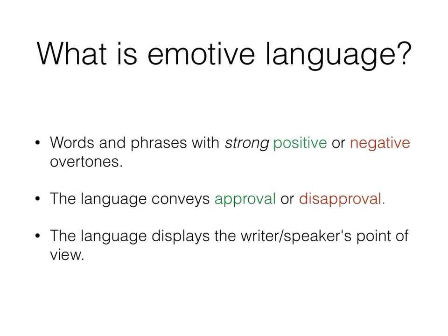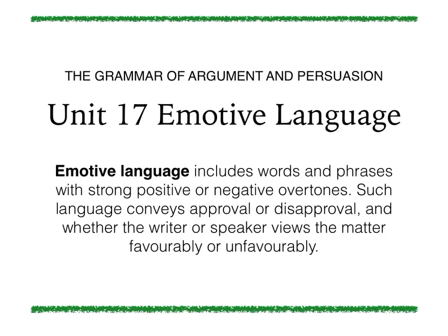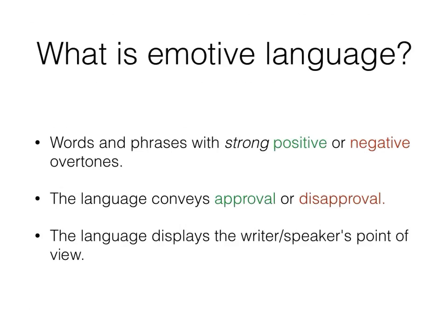So what exactly is Emotive Language? Emotive Language includes words and phrases with strong positive or negative overtones. The language conveys approval or disapproval, and also displays the writer or speaker's point of view.